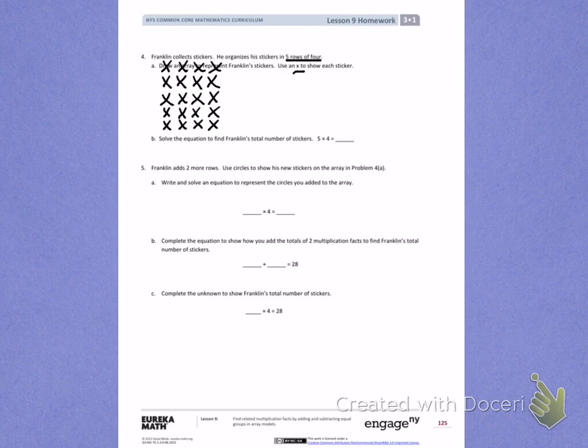Letter B. Solve the equation to find Franklin's total number of stickers. On your own, go back and skip count each row of X's. Once you have counted the total number of X's, fill in your answer on the blank.